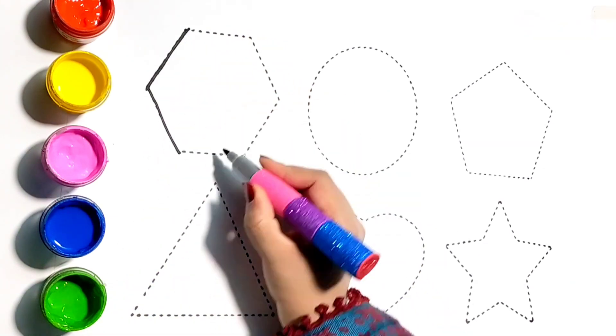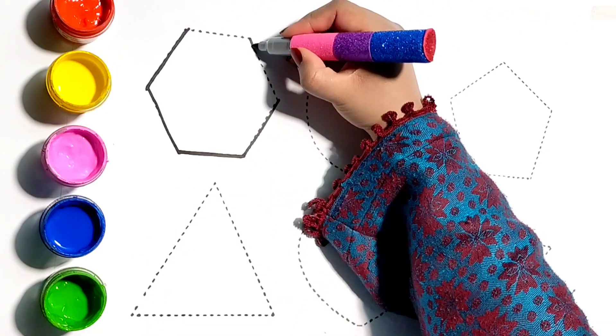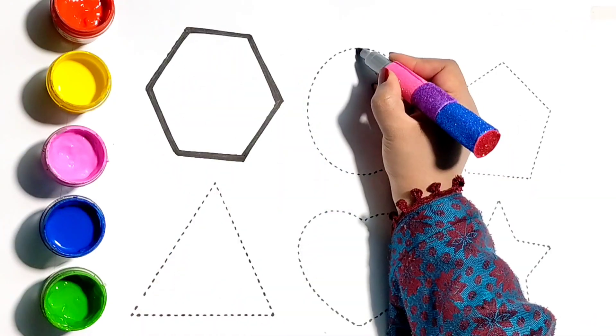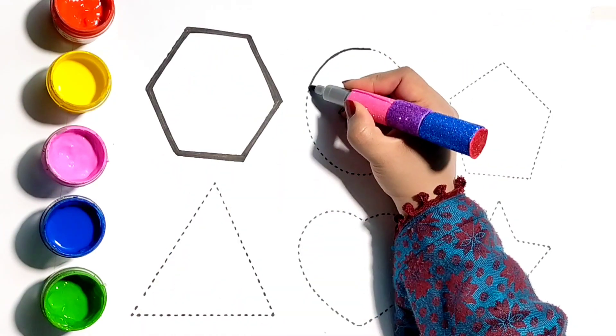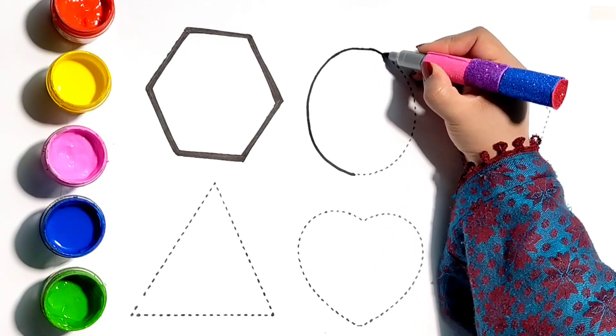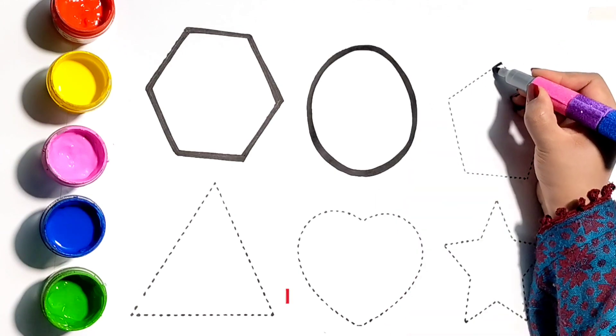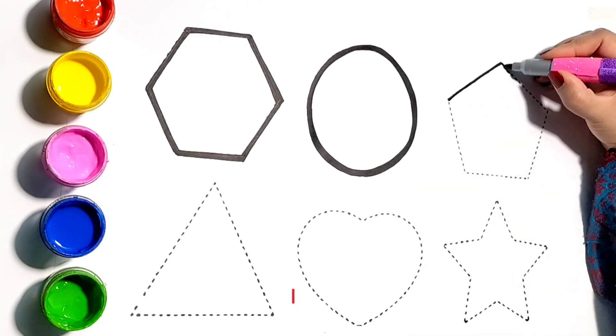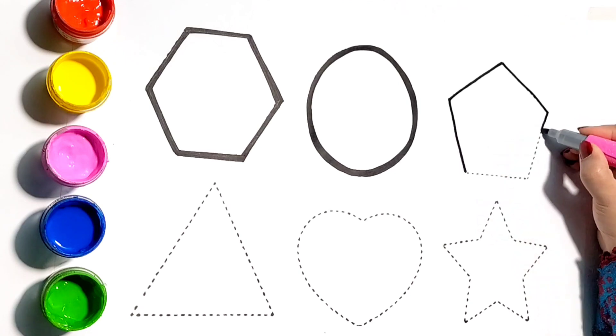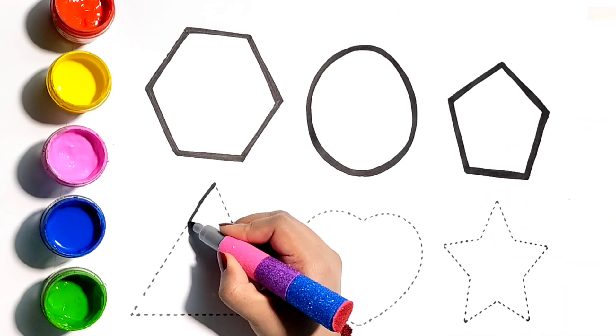First I am tracing Hexagon. Now I am tracing Circle. Let's draw a pentagon here. Now I am drawing Triangle.